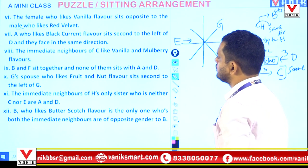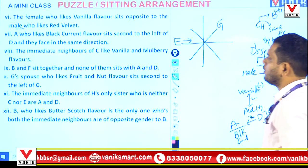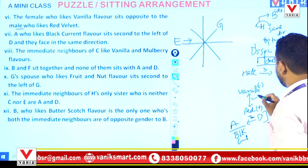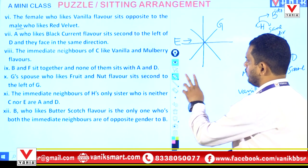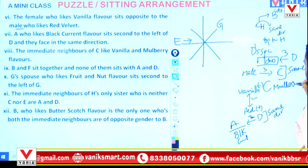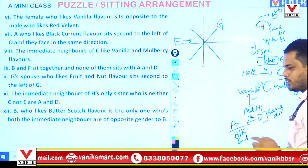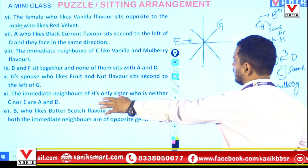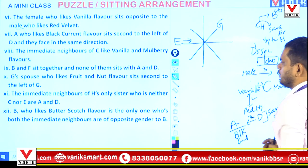Condition 8: The immediate neighbors of C like vanilla and mulberry flavors. We add C here because C will have two neighbors — one vanilla and one mulberry. Writing this nearby is useful because whenever we consider C's position, vanilla and mulberry must come with it mentally. Keeping connected data close makes it easier to link.